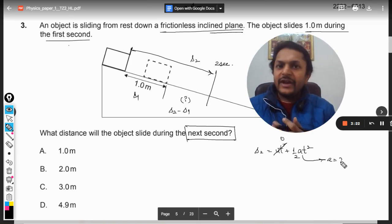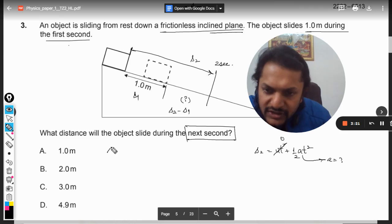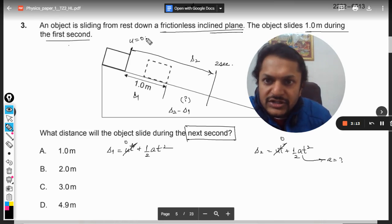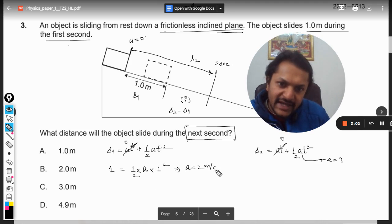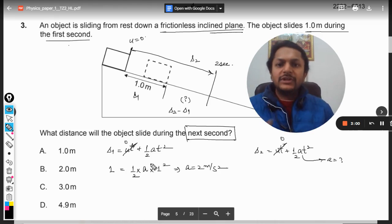So s1 equals ut plus half at squared. u in that case will also be equal to zero, and s is given as one meter. Half times acceleration is unknown and the time spent is also one. From this I can say that the body is accelerated at two meters per second squared.